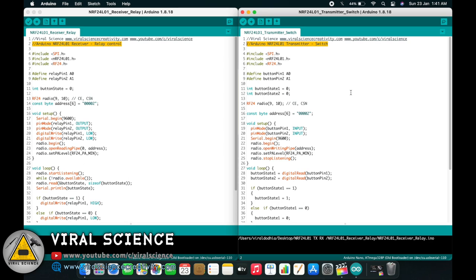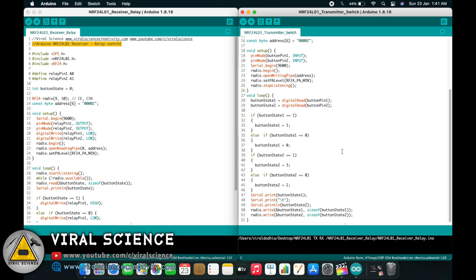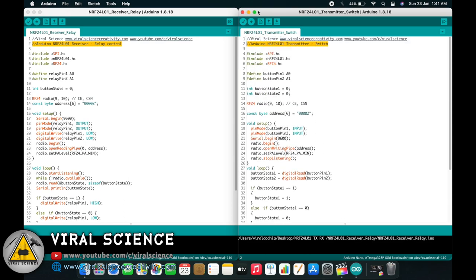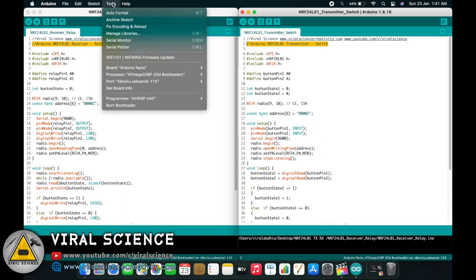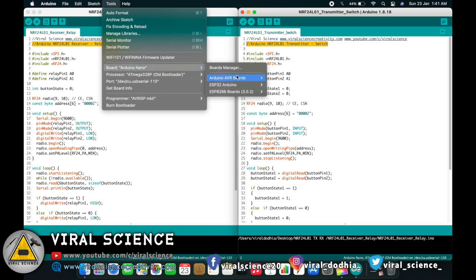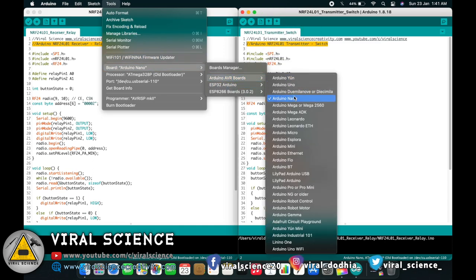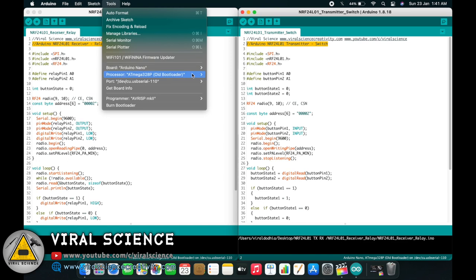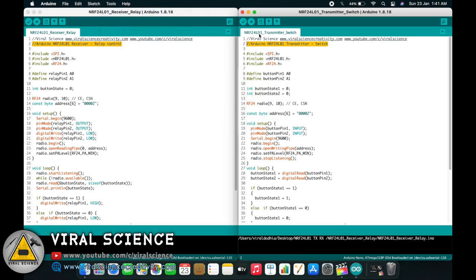One will be the transmitter and one will be the receiver. To upload the code, you need to select your board (Arduino Nano), select the port, select the processor as old bootloader, and upload the code.